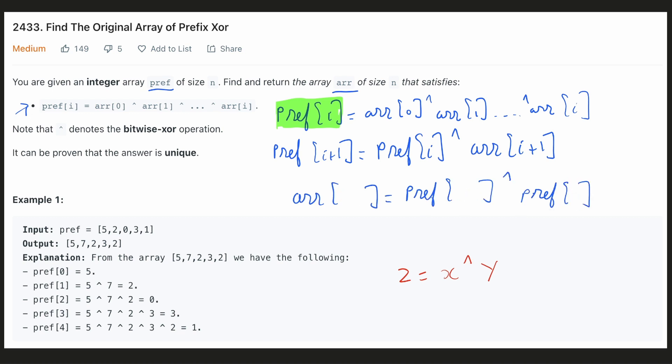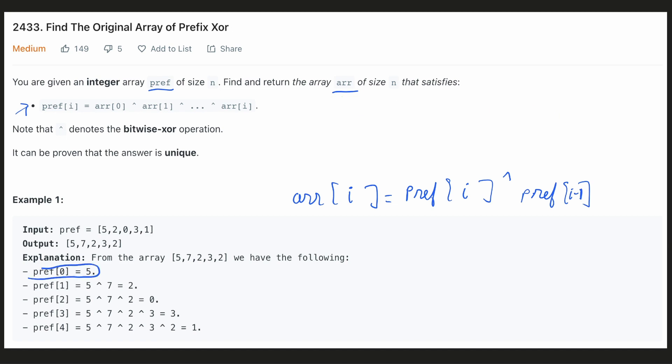So now let's rearrange our equation. This could also be written as z. So the ith element in the output array would be xor of the prefix element at the same index and one index before. We could also observe that the zeroth index in both the arrays would always be the same.